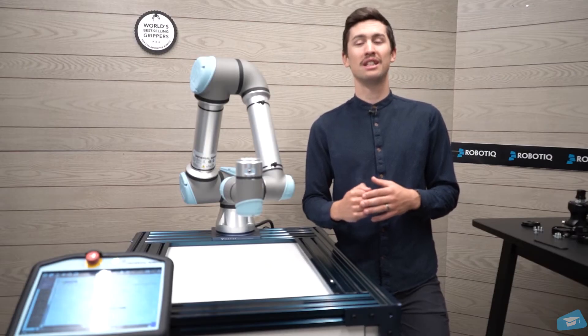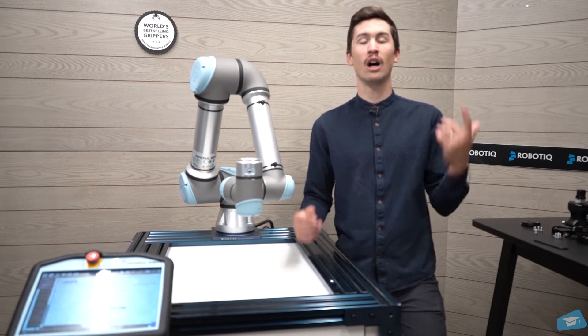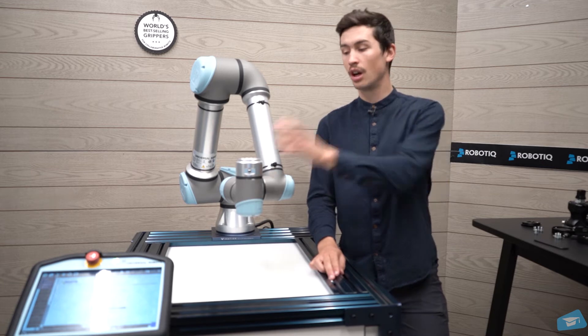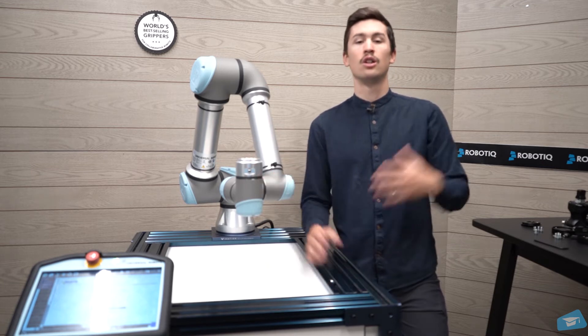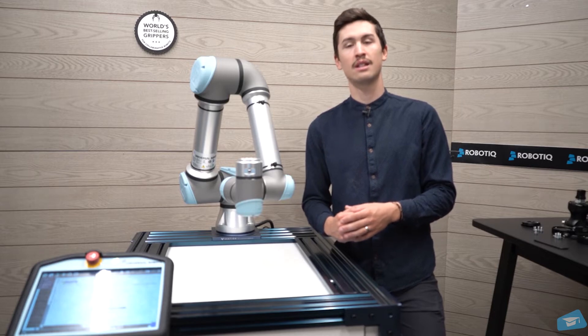Hi everybody and welcome to the CNC machine tending installation video. In this video, I will show you how to install the different components of the kit onto the robot. To complete this lesson, you will need the gripper UR cap already installed in your robot.